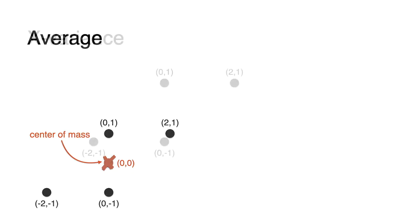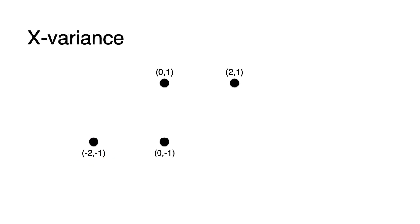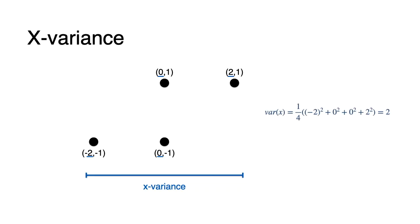We end up with this new centered dataset. Now I'm going to teach you how to find the x-variance — a measure of how spread in the horizontal direction the dataset is. For this, we only need to look at the x-coordinate and simply take the average of the squares of these variables. Why the squares? Because we want to check how far points are from the origin — we don't want a positive 2 to negate a negative 2. The farther points are in the x-direction, the more variance there is. In this case, it's one-quarter of (2² + 0² + 0² + (−2)²), which equals 2.